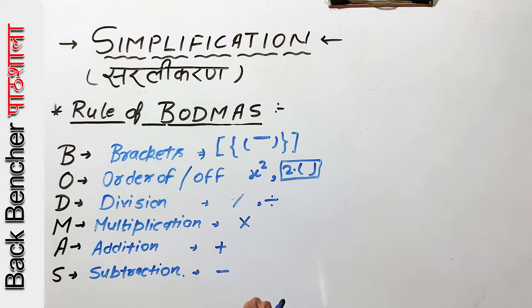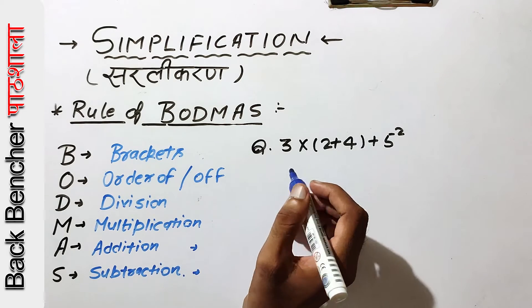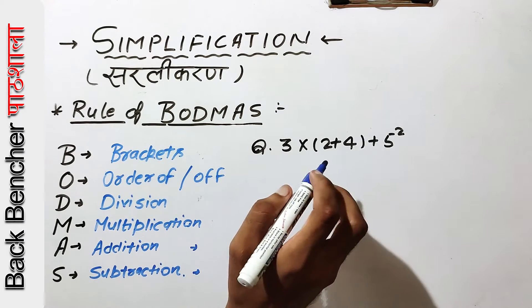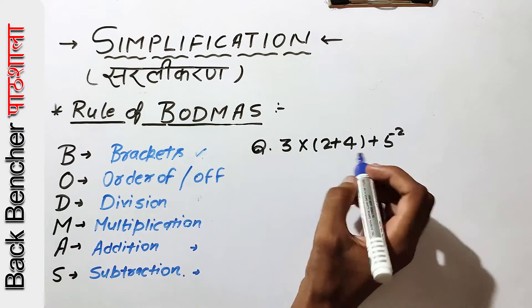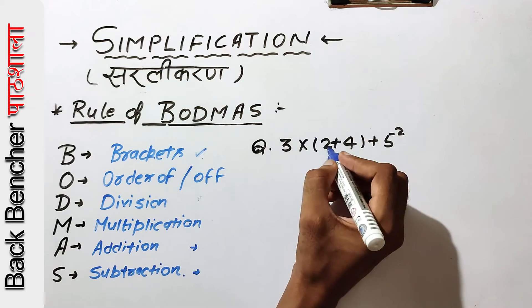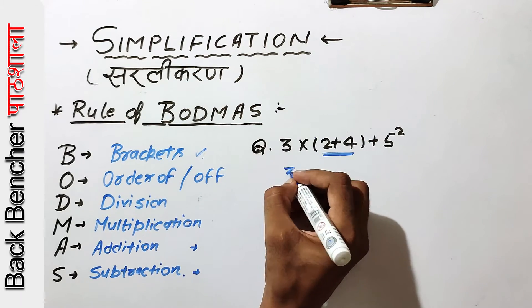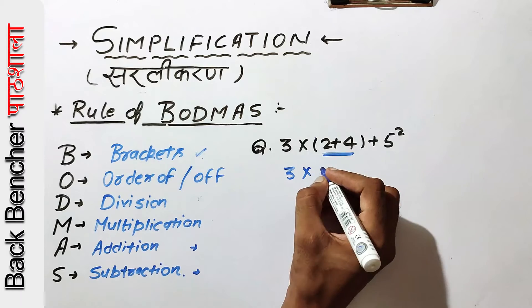Now we will take some questions using BODMAS. First, we will check the brackets. In the brackets we will solve that. Three times two is six.